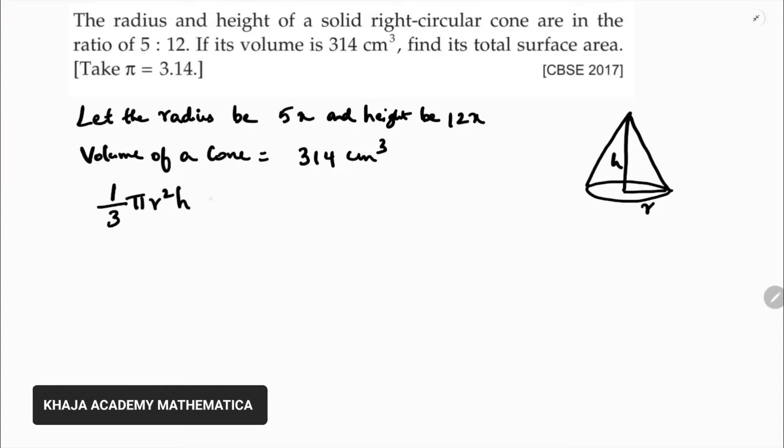1 by 3 pi r square h equals 314. Now 1 by 3 times pi is 3.14. Radius is 5x whole square. Height is 12x equals 314.